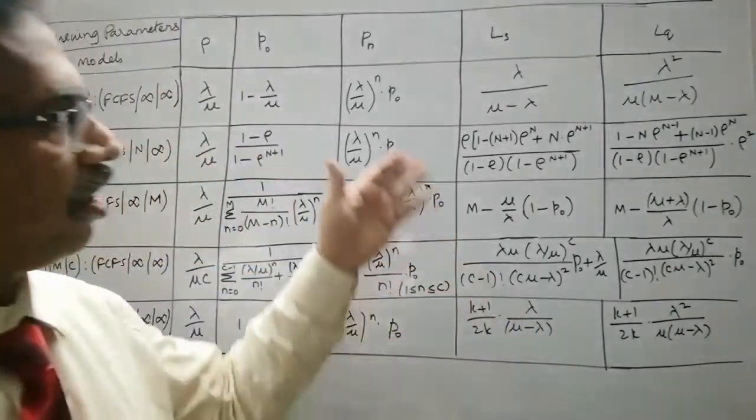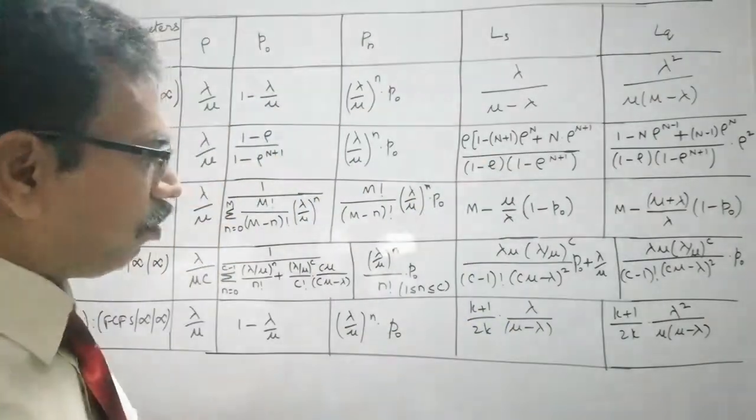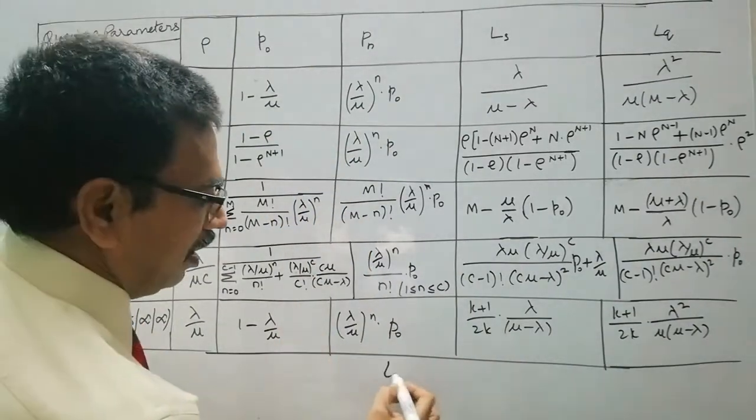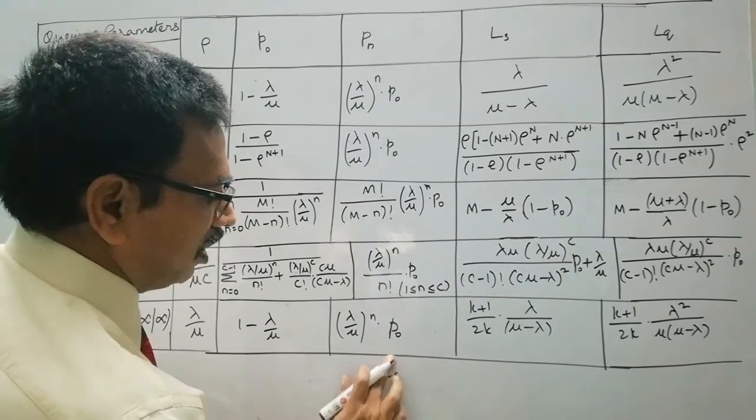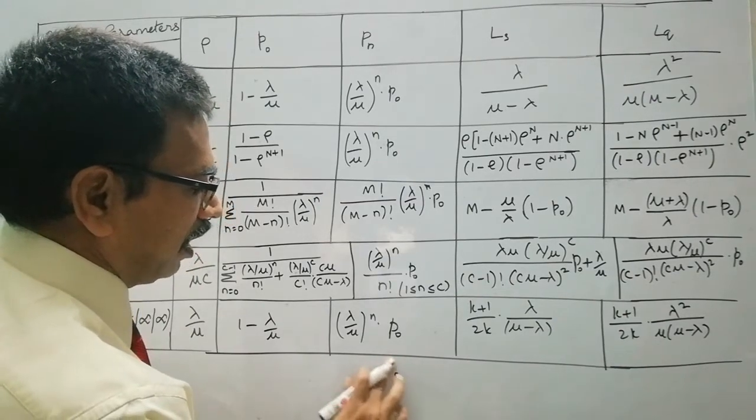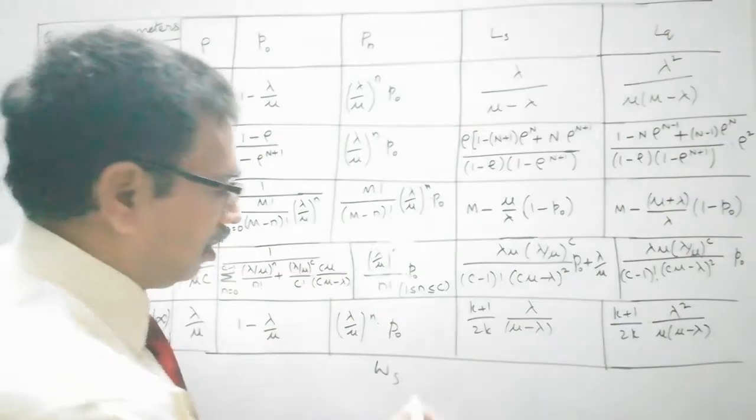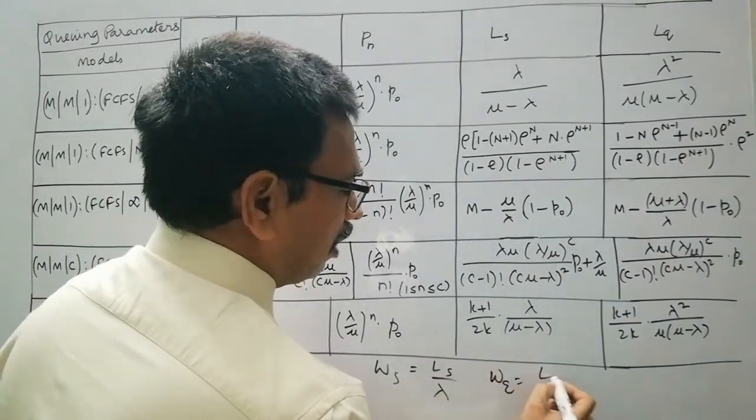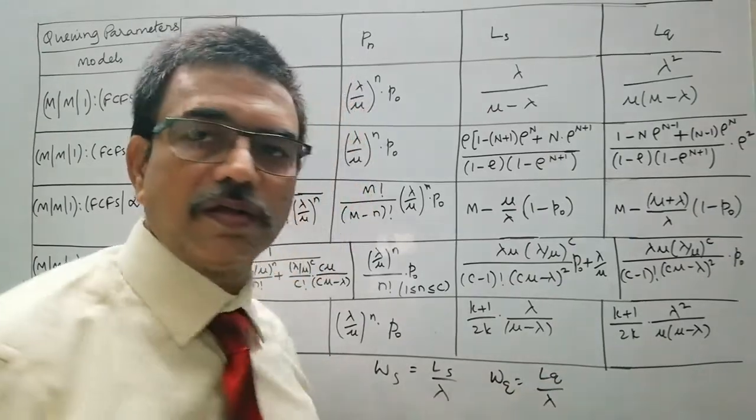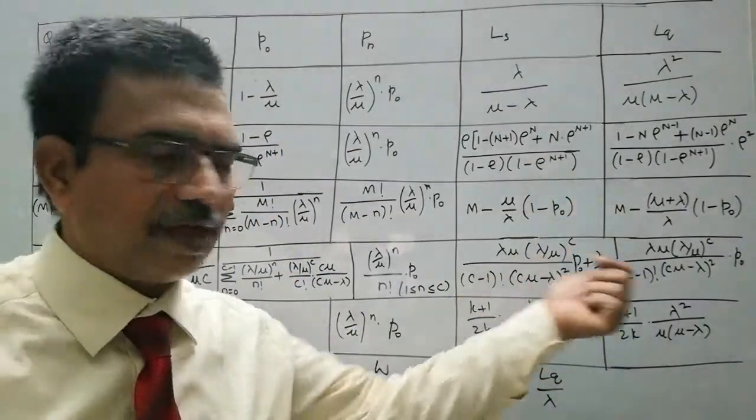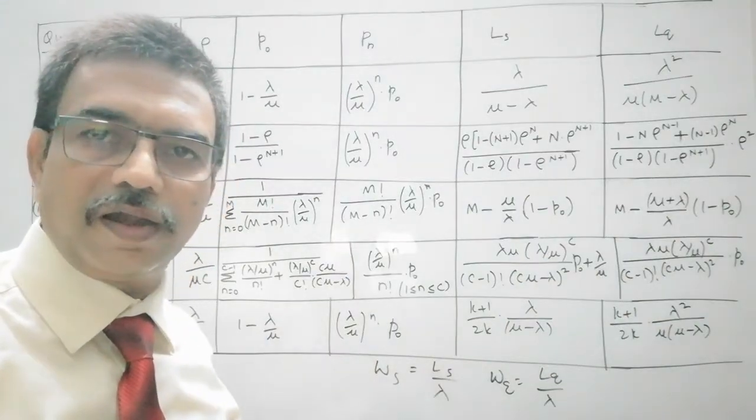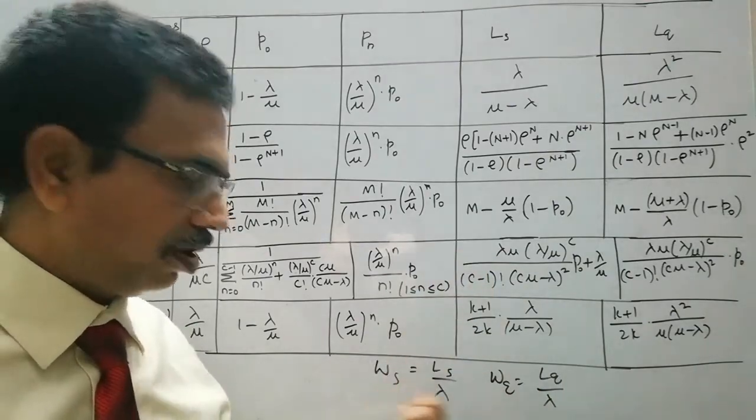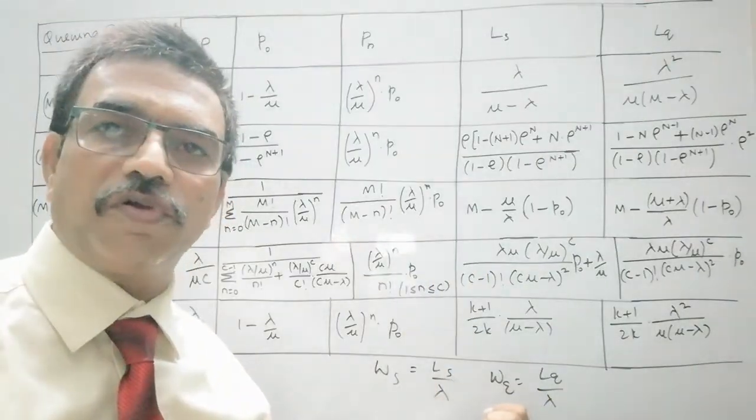Whereas, for Ws and Wq, for all models except this one, for all models, Ws equal to, that is the expected waiting time or time spent by a customer in the system is Ls/λ, and Wq equal to Lq/λ. So no need to derive these lengthy expressions for Ws and Wq, simply you can use these relations. Once Ls and Lq are found, Ws and Wq can be easily found using these relations.